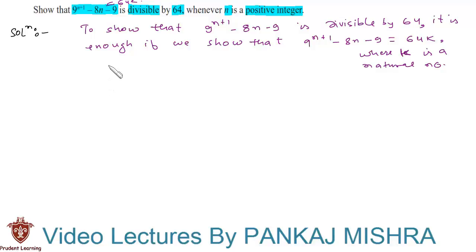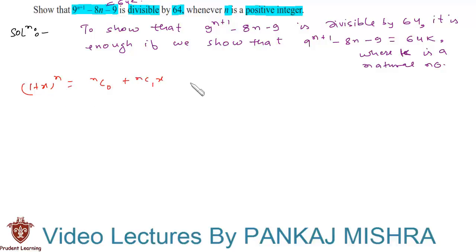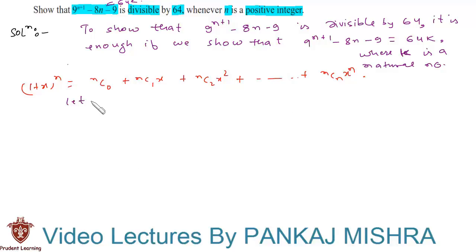Now we know that by using the binomial theorem, we have 1 plus x, whole raised to the power of n, equals n C 0 plus n C 1 times x, plus n C 2 times x squared, all the way up to n C n times x raised to n. In this equation, let us substitute x equal to 8 and n equal to n plus 1.